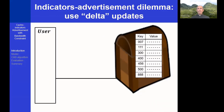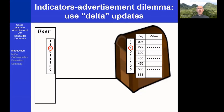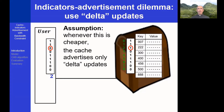Sometimes it is possible to save bandwidth by sending delta updates, that only include the list of changes since the last update was sent. In our example, only the bit indexed 2 was changed since the last advertisement. Hence, sending a delta update is cheaper than sending a full update. However, when the number of changes since the last advertisement is large, sending such a delta update is not beneficial anymore. We assume that whenever this is cheaper, the cache advertises only delta updates.